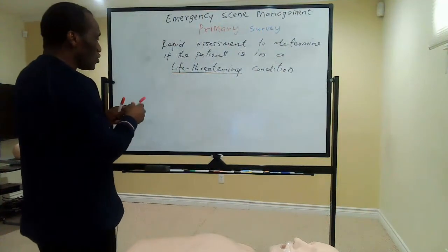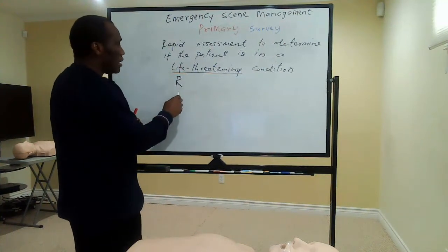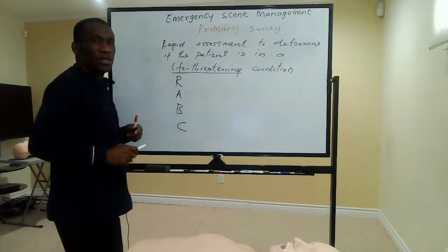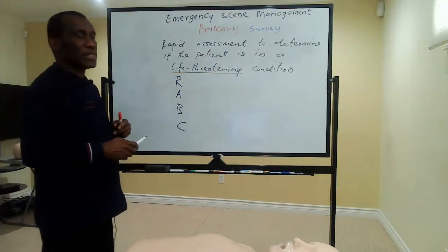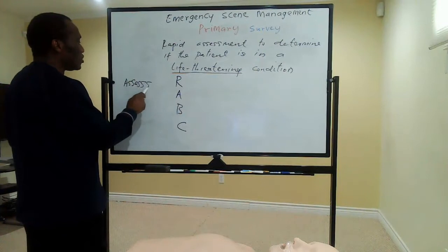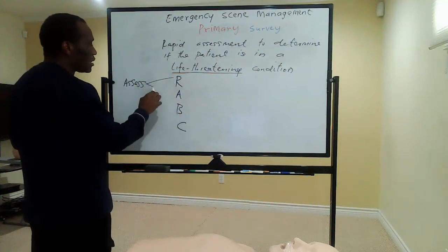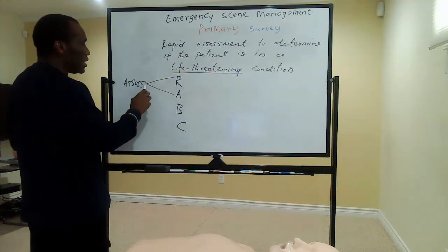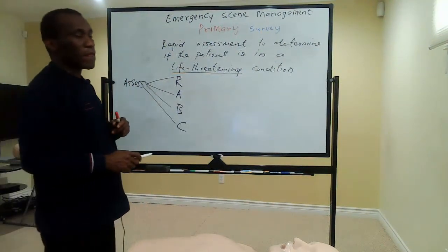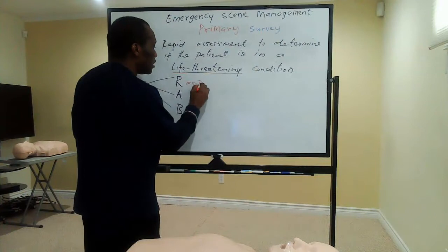I'm going to use four letters to represent those areas: R, A, B, C. You have to assess all four. R means Responsiveness — you want to check if the patient is responsive or not. A is for Airway. B is for Breathing. And C is for Circulation.